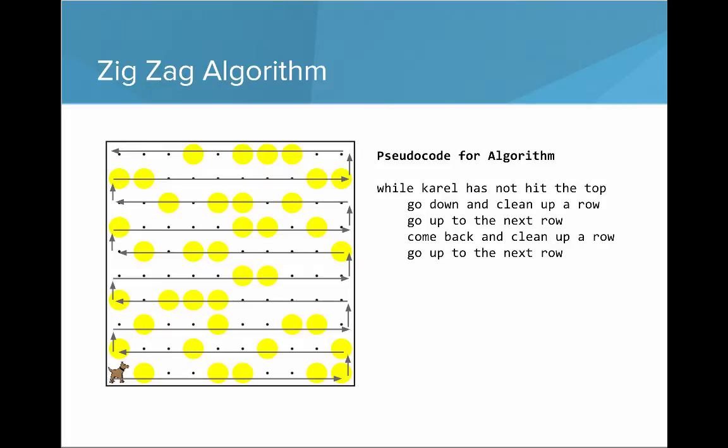And I can think about writing the pseudocode for this algorithm, which would look something like this. While Karel has not hit the top, go down and clean up a row, go up to the next row, come back and clean up a row, go up to the next row.